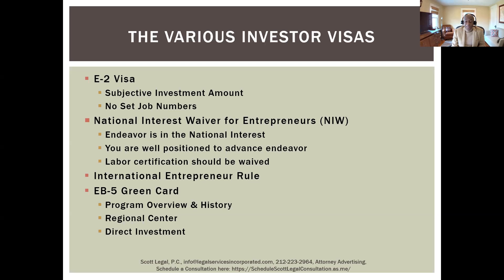The international entrepreneur rule applies to individuals who want to come to the United States and meet certain requirements, including having an institutional investor that has invested approximately $250,000 in their business, plus a minimum ownership percentage and other factors. And then finally, we come to the EB-5 green card, which is what we'll spend most of the time discussing today.